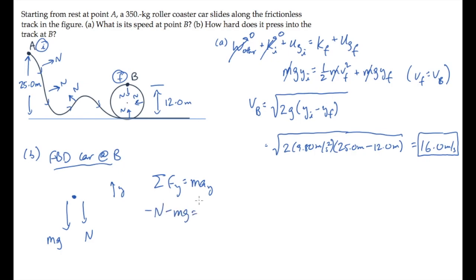On the right-hand side, the Y component of acceleration is the centripetal acceleration. The car is moving in a circle at that point. That acceleration has a magnitude of V squared over R, and is directed toward the center of the circle, which is also in the negative Y direction.